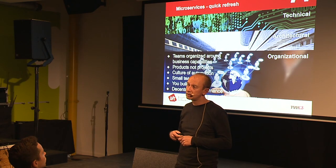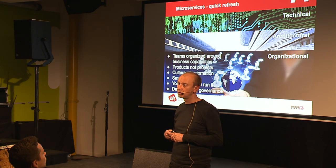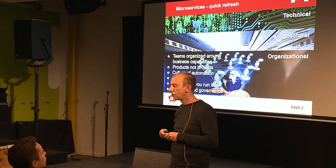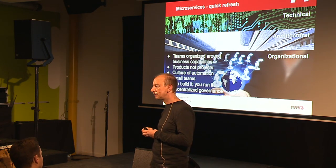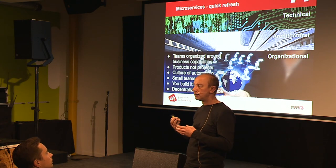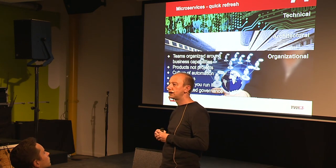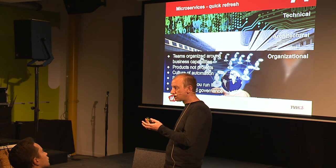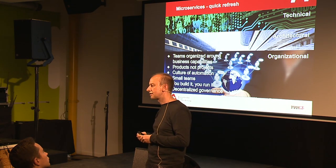The third component is equally — maybe even more — important than the other two, and that is the organizational aspects. What you want to do within your organization is identify teams that can work around a specific business capability. Where in the monolithic context people can work on every piece of the system without always taking ownership, in a more microservices-minded context you want to isolate a chunk of the system and give end-to-end ownership to the people that operate that cell.